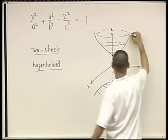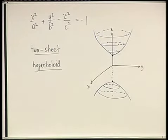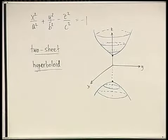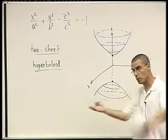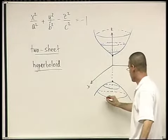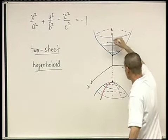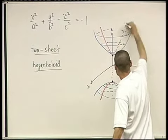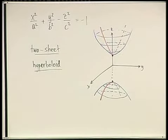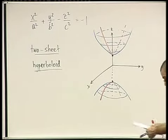When y = 0, the hyperboloid in the xz plane is again a hyperbola lying sideways — so in red it looks like this. That's not two parabolas, it's a hyperbola. That's the two-sheet hyperboloid.